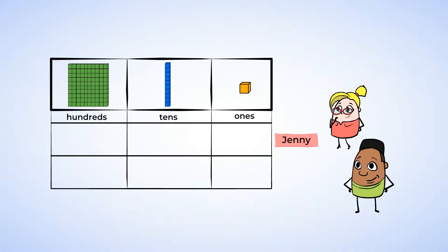Jenny scored 467. So that means there's a 4 in the hundreds place, a 6 in the tens place, and a 7 in the ones place. And Will scored 459. So there's a 4 in the hundreds place, a 5 in the tens place, and a 9 in the ones place. That's all ready? Now let's look at the hundreds place and figure out who won.